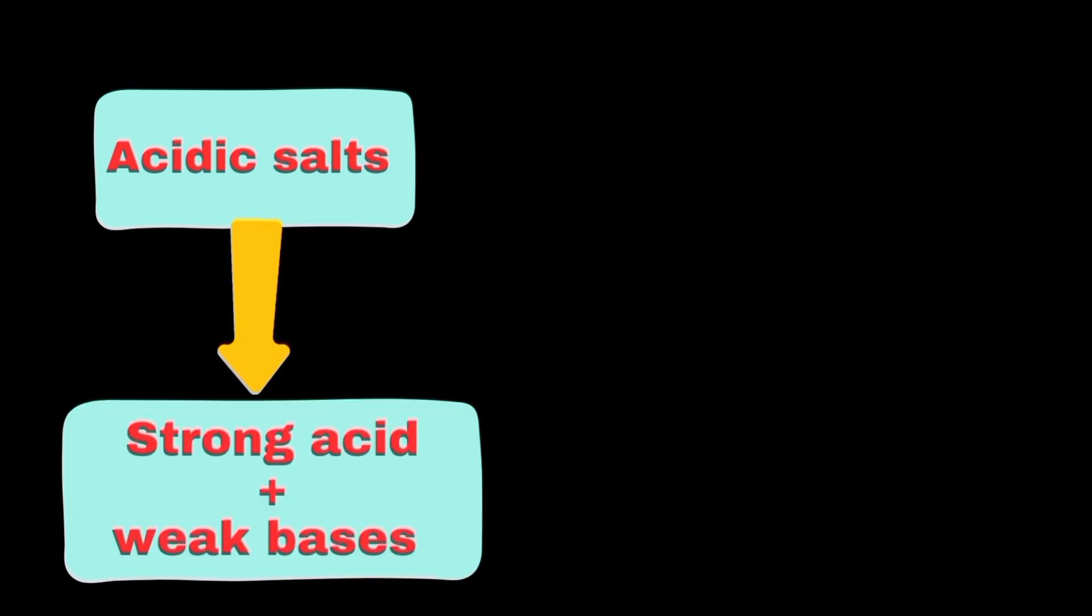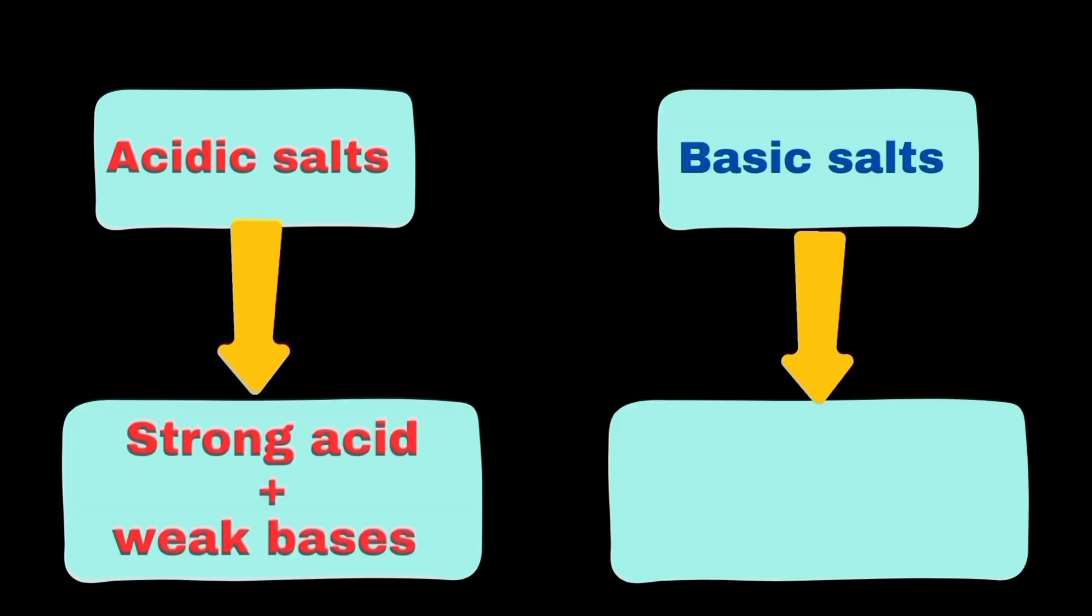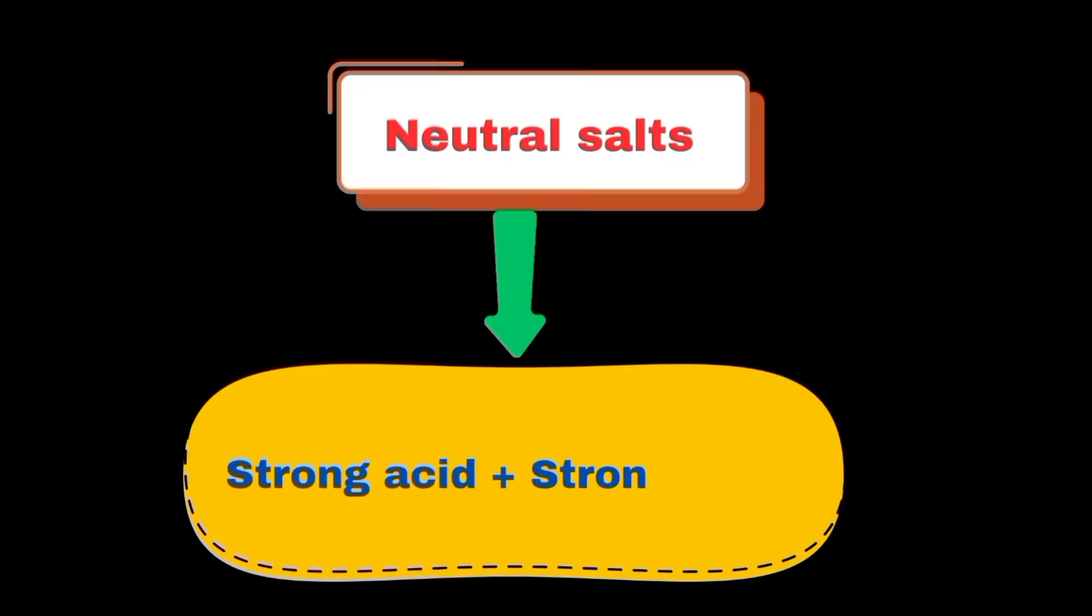Acidic salts come from strong acids and weak bases, while basic salts come from strong bases and weak acids. Neutral salts result from strong acid and strong base reactions.